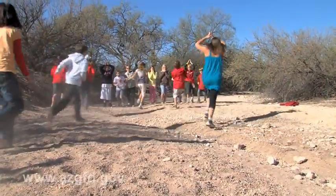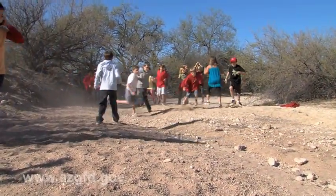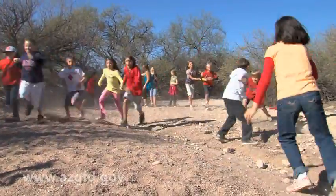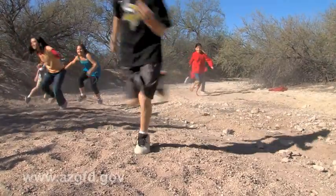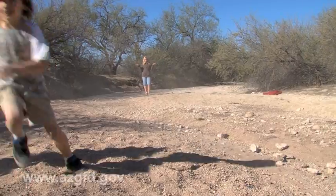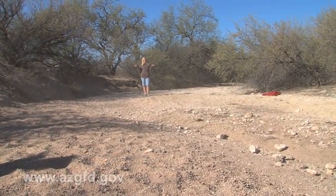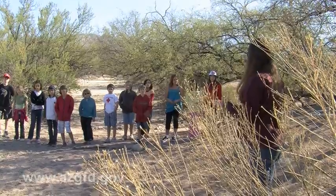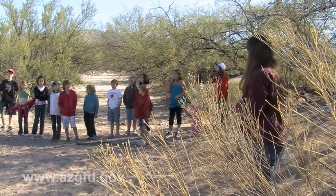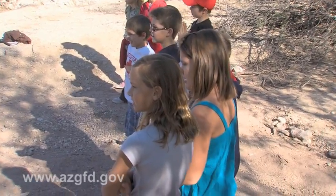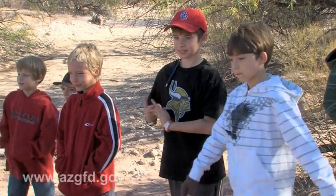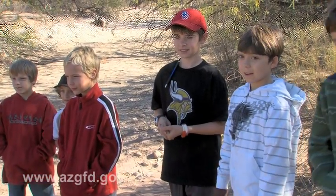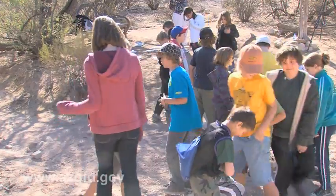It doesn't take long for the students to demonstrate that an ecosystem with an overabundance of deer and no predators will eventually make for a short supply of resources for deer as well as other animals. We started out with 10 deer. How many deer do we have now? We have 16 deer. Are all you deer going to survive? No. So most of you are going to die.